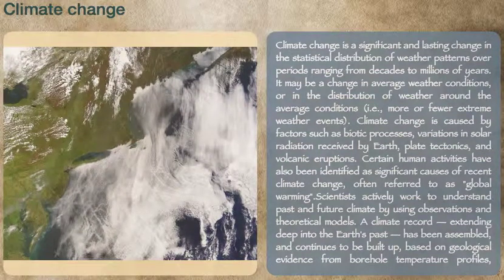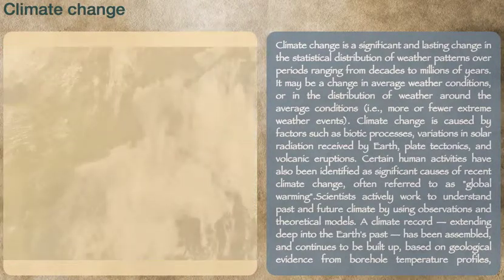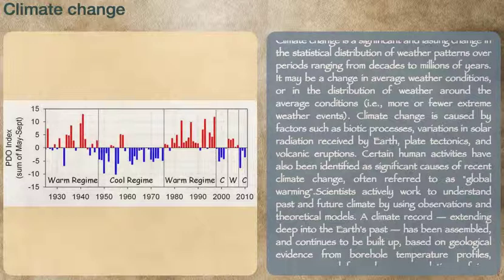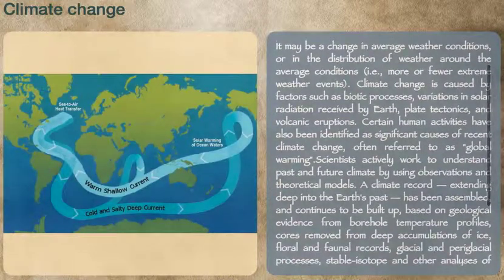Climate change is a significant and lasting change in the statistical distribution of weather patterns over periods ranging from decades to millions of years. It may be a change in average weather conditions, or in the distribution of weather around the average conditions, i.e., more or fewer extreme weather events.